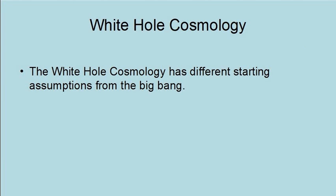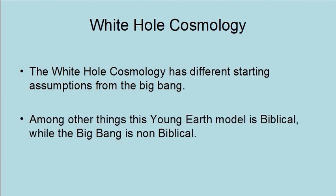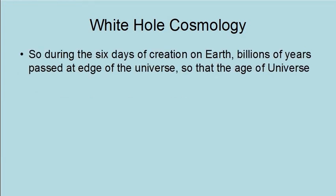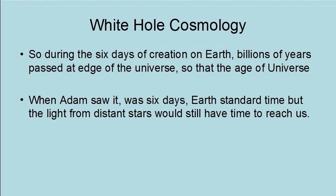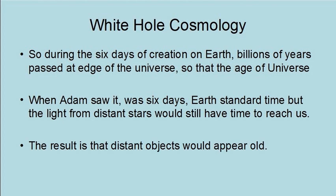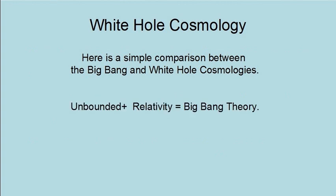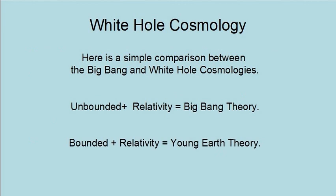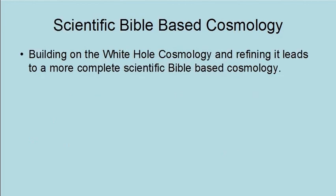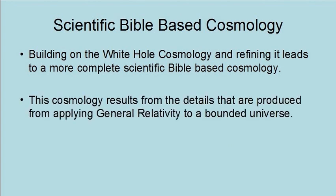The Whitcomb cosmology has different starting assumptions from the Big Bang. Among other things, this young Earth model is biblical, while the Big Bang is non-biblical. So during the six days of creation on Earth, billions of years passed at the edge of the universe, meaning that when Adam saw it, the edge of the universe was six days by Earth's standard time — but light from distant stars would still have had time to reach us, and distant objects would appear old. Here is a simple comparison: an unbounded universe plus relativity equals Big Bang theory; a bounded universe plus relativity equals a young Earth theory. Building on the Whitcomb cosmology and refining it leads to a more complete, scientific, Bible-based cosmology, resulting from applying general relativity to a bounded universe.